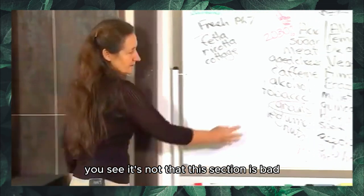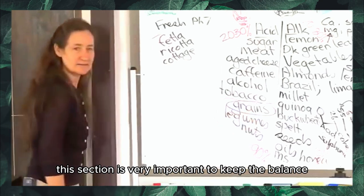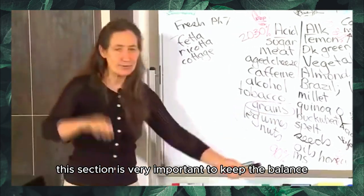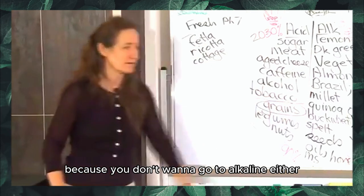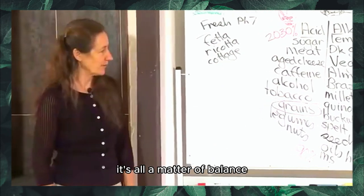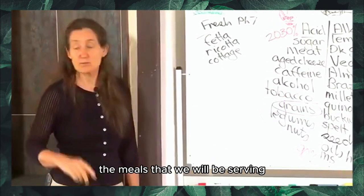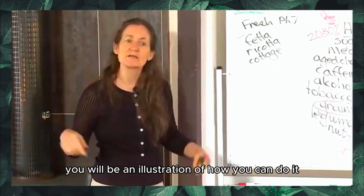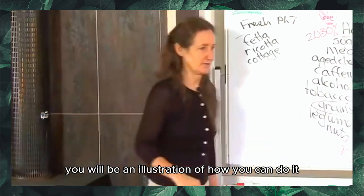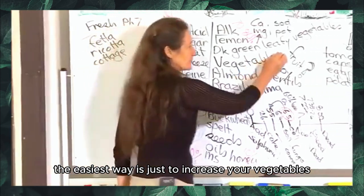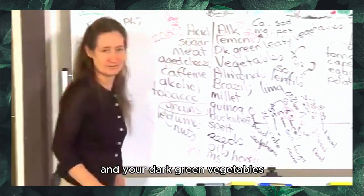It's not that this section is bad. This section is very important to keep the balance because you don't want to go too alkaline either. It's all a matter of balance. The meals that we will be serving you will be an illustration of how you can do it. And the easiest way is just to increase your vegetables and your dark green vegetables.